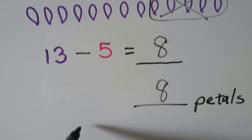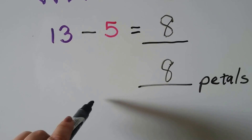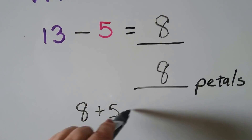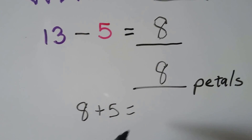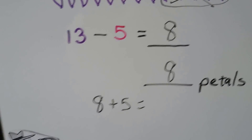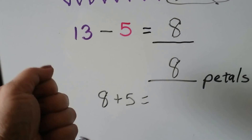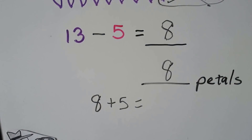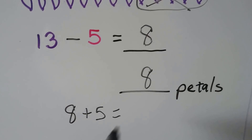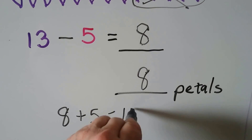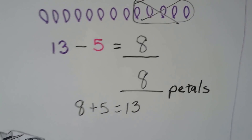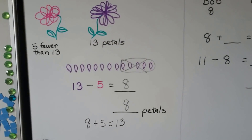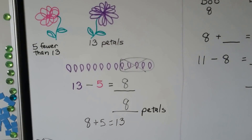We can check it — we can add 8 plus 5 and count on: 8, 9, 10, 11, 12, 13. 8 plus 5 is 13, so we know we did it right. We showed our work.